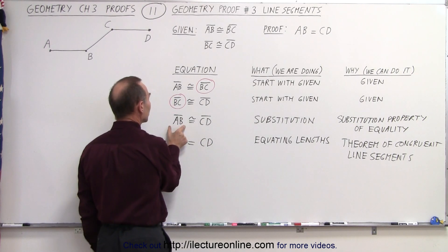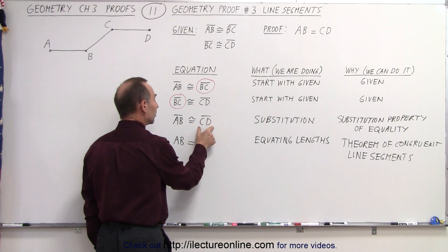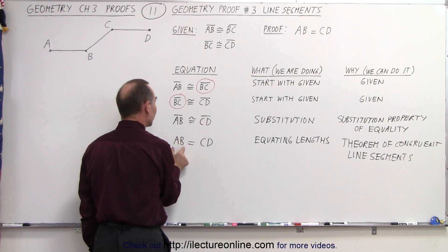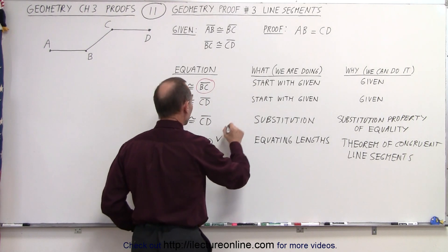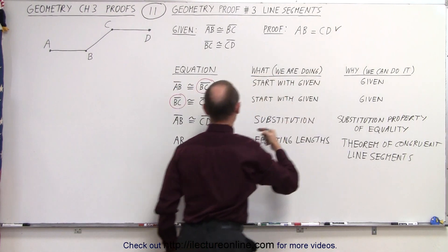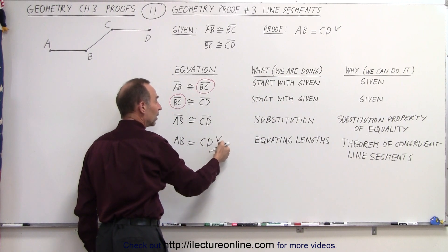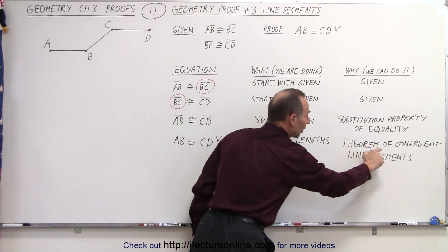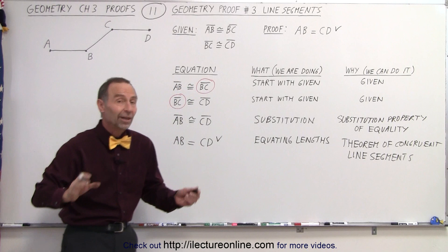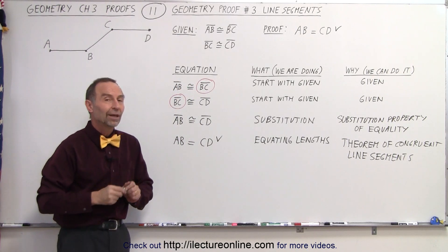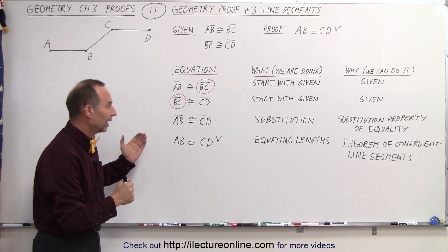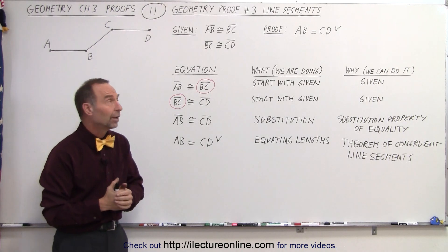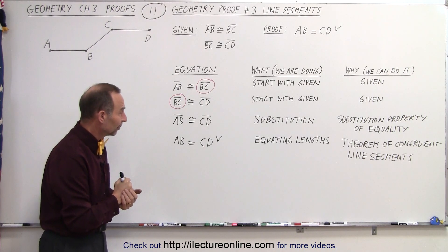So instead of writing that line segment AB is congruent to line segment CD, we can write that the length of AB is equal to the length of CD — which is exactly what we're trying to prove. The theorem of congruent line segments tells us that if they are congruent, then their lengths are equal to one another. Therefore, we've been able to prove that AB equals CD. And that's how it's done.